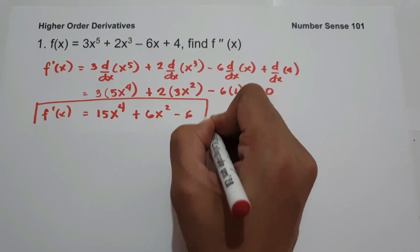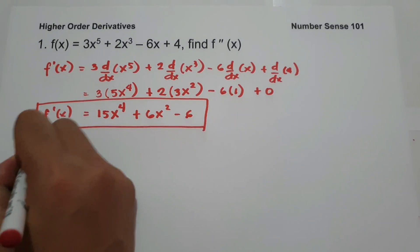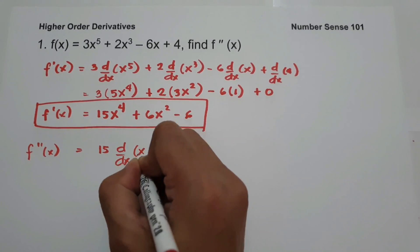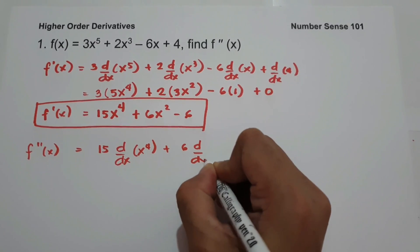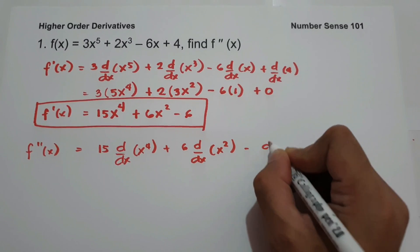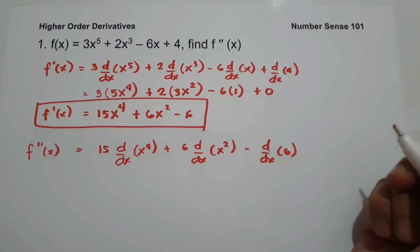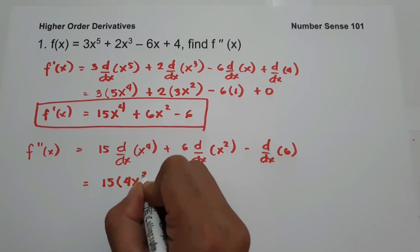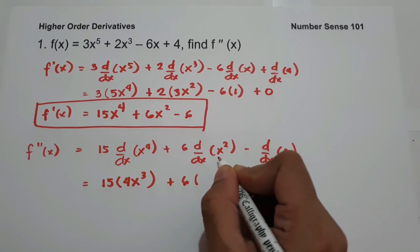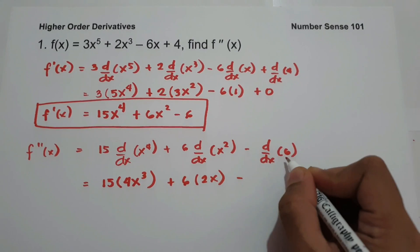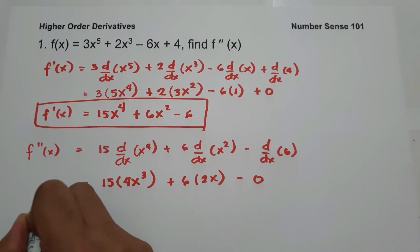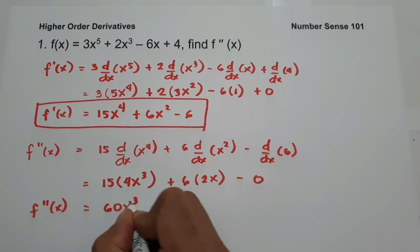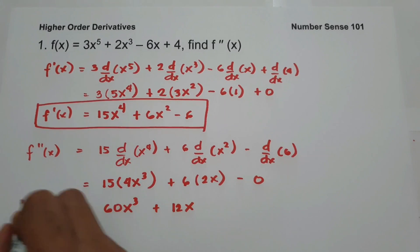So the first derivative is 15x raised to 4 plus 6x squared minus 6. And to find the second derivative, we take the derivative of that: 15 times the derivative of x to the 4th, plus 6 times the derivative of x squared, minus the derivative of 6. That gives us 15 times 4x cubed plus 6 times 2x, so the second derivative is 60x cubed plus 12x.